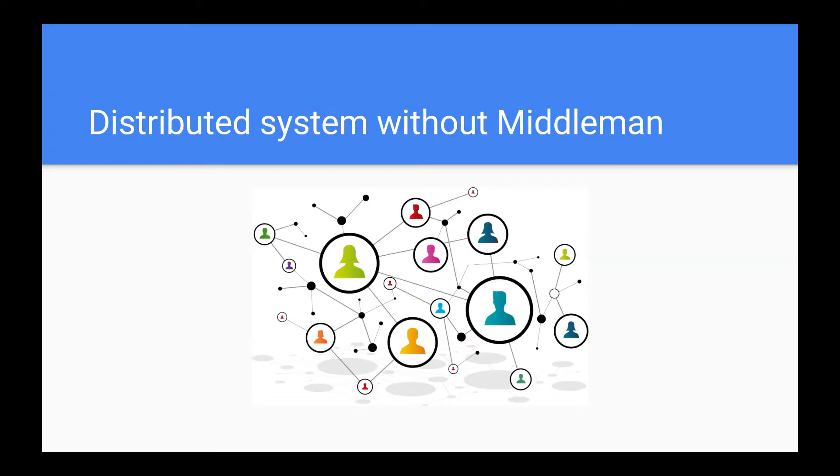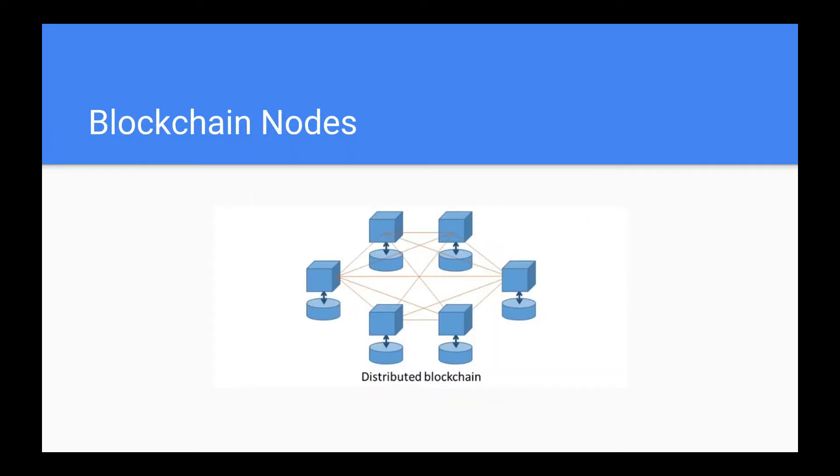Blockchain kind of works in a similar way. Instead of saving data at a single central location, it stores data in different computers across the globe which is called nodes. It uses a technology which makes sure all the data remains in sync with each other. Whenever new data has to be added in it, it is copied across the nodes. This is the job of these nodes or peers to make sure their database is in sync with others.